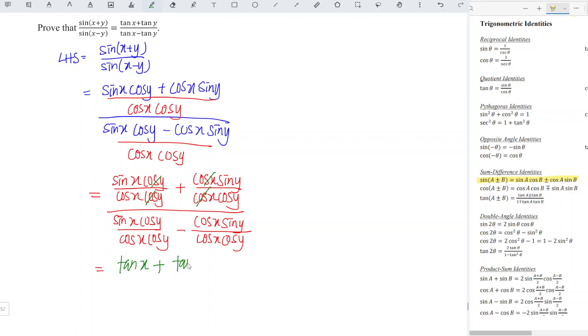And the same goes for the denominator. We simplify and we should obtain tangent x minus tangent y. This is our right-hand side, and hence we've proved it. That's all for this video. Thanks for watching and I'll see you next time.